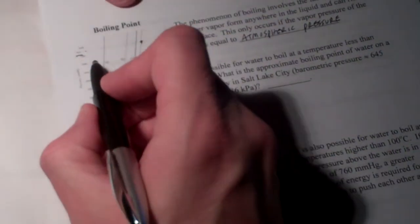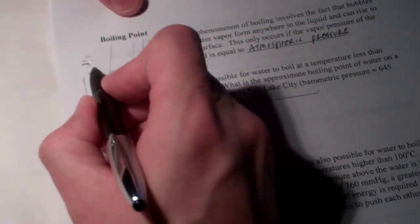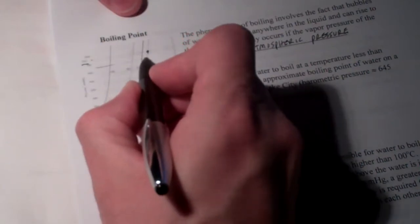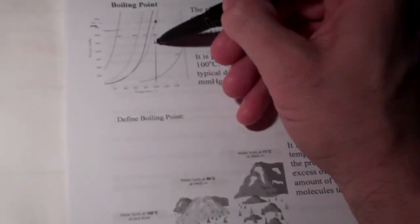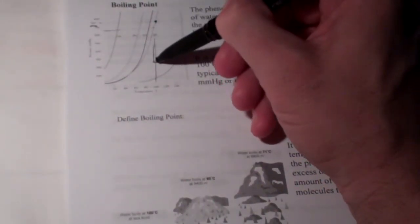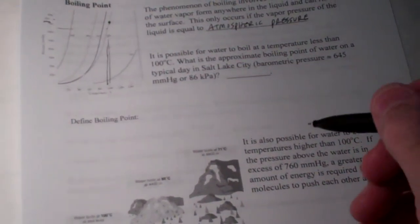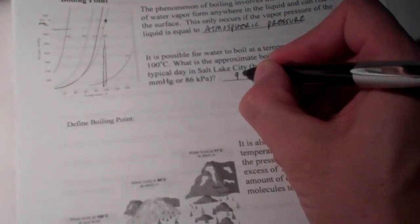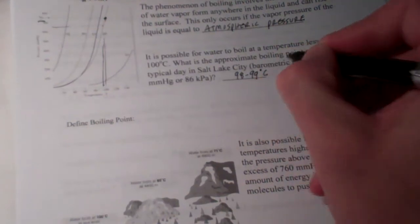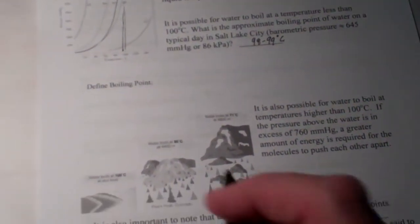So, if we go to 645 millimeters of mercury right about here on our graph, you will notice that the boiling point of water is slightly lower than 100 degrees. It's about 98 to 99 degrees Celsius.